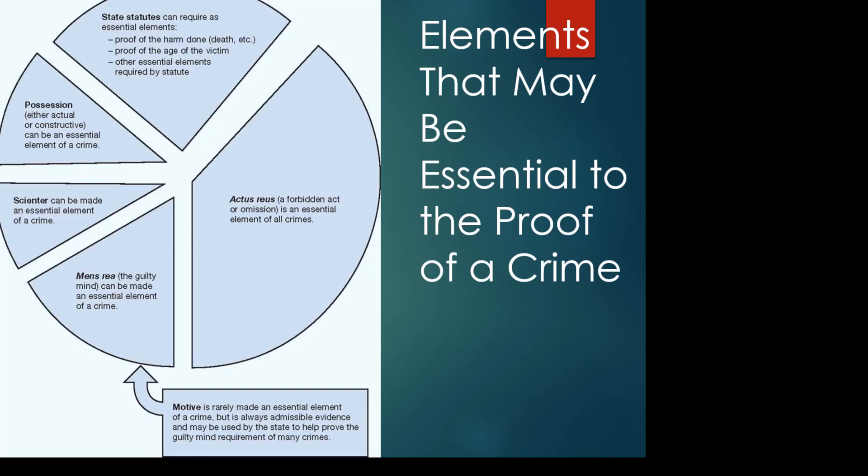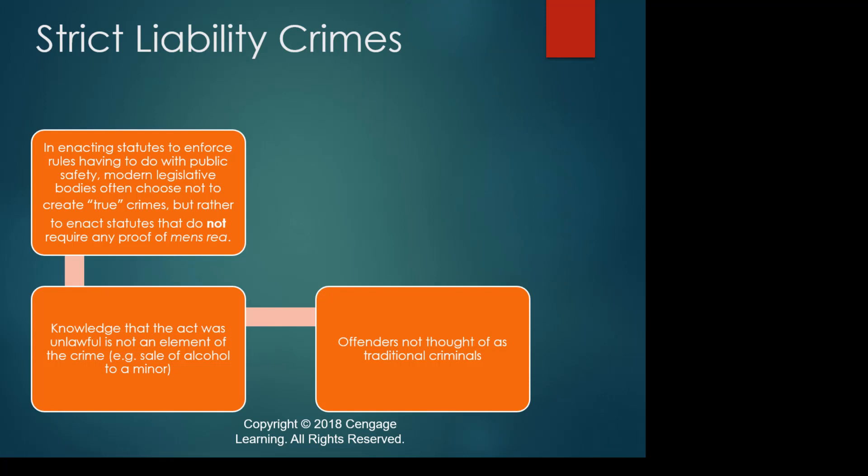Here are some of the different elements that may be essential to the proof of a crime: obviously the actus reus — the physical acts, because thinking about things isn't bad; the mens rea; you may require scienter or as a substitute, possession; or there can be statutes that are unique, requiring proof of harm done, proof of the age of the victim, or other essential elements required by statute.